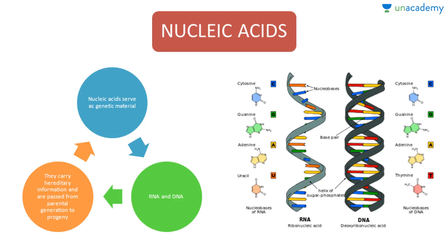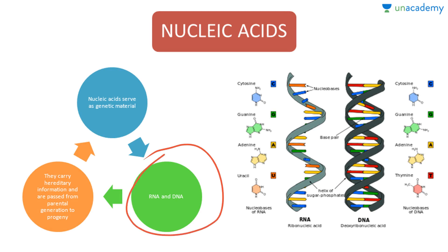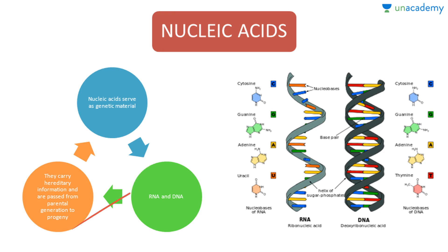Nucleic acids serve as genetic material — that is, they are RNA and DNA, which stand for ribonucleic acid and deoxyribonucleic acid. They carry hereditary information and are passed from the parental generation to progeny, carrying information from one generation to another. These are the basic differences between RNA and DNA.